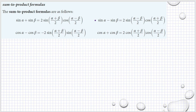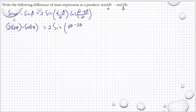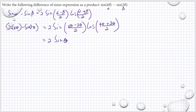The formula is 2·sine[(α − β)/2]·cosine[(α − β)/2]. So we have sine(4θ) − sine(2θ) = 2·sine[(4θ − 2θ)/2]·cosine[(4θ + 2θ)/2]. Then we have 2·sine(2θ/2) which is just sine(θ), times cosine(6θ/2) which is cosine(3θ).